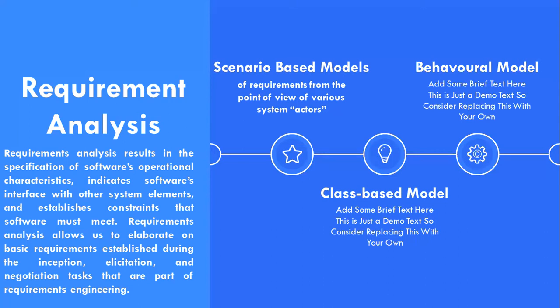Behavior models typically consist of various types of UML diagrams such as sequence diagrams and interaction diagrams, each entailing the detailed flow of use cases. The sequence diagram in a behavioral model represents the sequence of events or operations that happen in response to an action of an actor within the system. Communication diagrams can also play an important role in defining system behavior, as they show messages passing within and across the system and groups of objects interacting with each other.